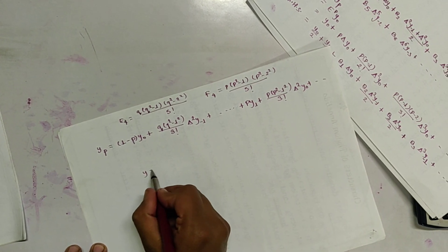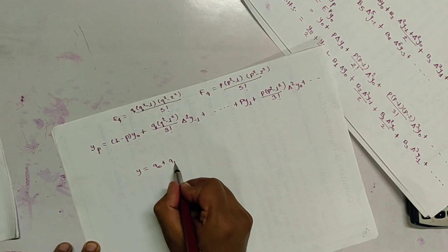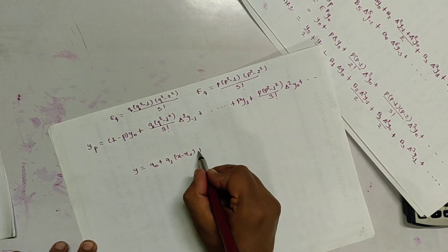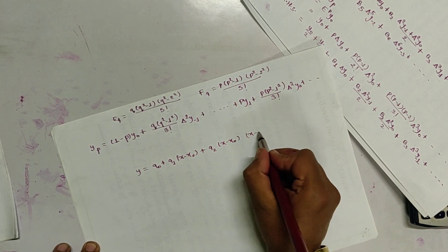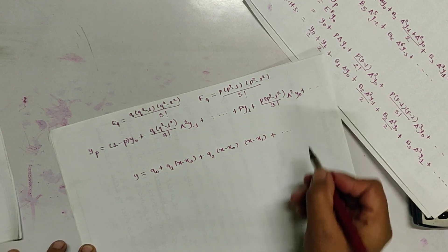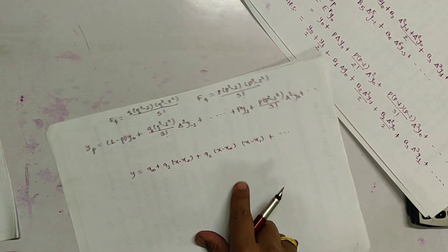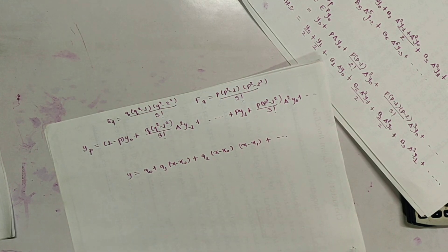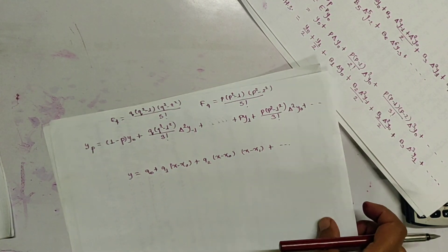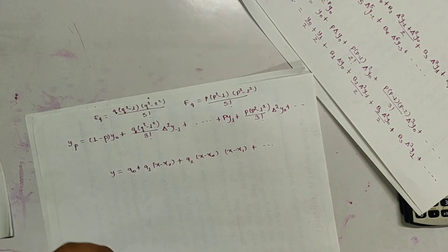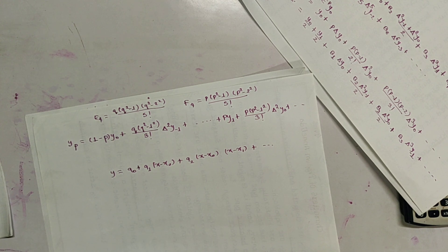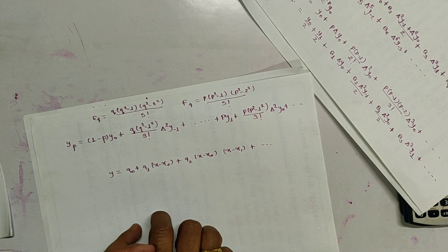That means y equals a0 plus a1(x minus x0) plus a2(x minus x0)(x minus x1) plus dot dot dot. This was the polynomial I used during the video on interpolation. So this is the end of interpolation. In the next video, I will be continuing with regression, or fitting a curve or line into the given data. Thank you, bye-bye.